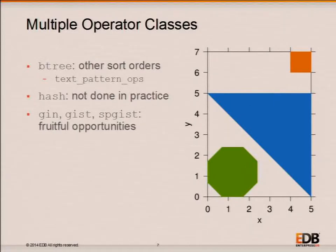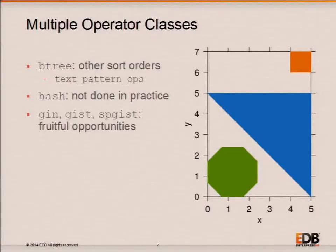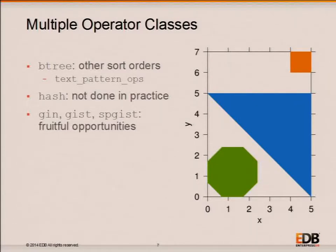This also comes up in the natural world. What is the largest lake? Lake Baikal is largest by volume, Lake Superior by area, and Lake Tanganyika by longest surface diagonal. This flexibility isn't used much in the core code. One example is the non-default operator class text_pattern_ops, which has been somewhat obsolescent since 9.1 introduced the COLLATE keyword, but still exists for backward compatibility to support LIKE optimization.